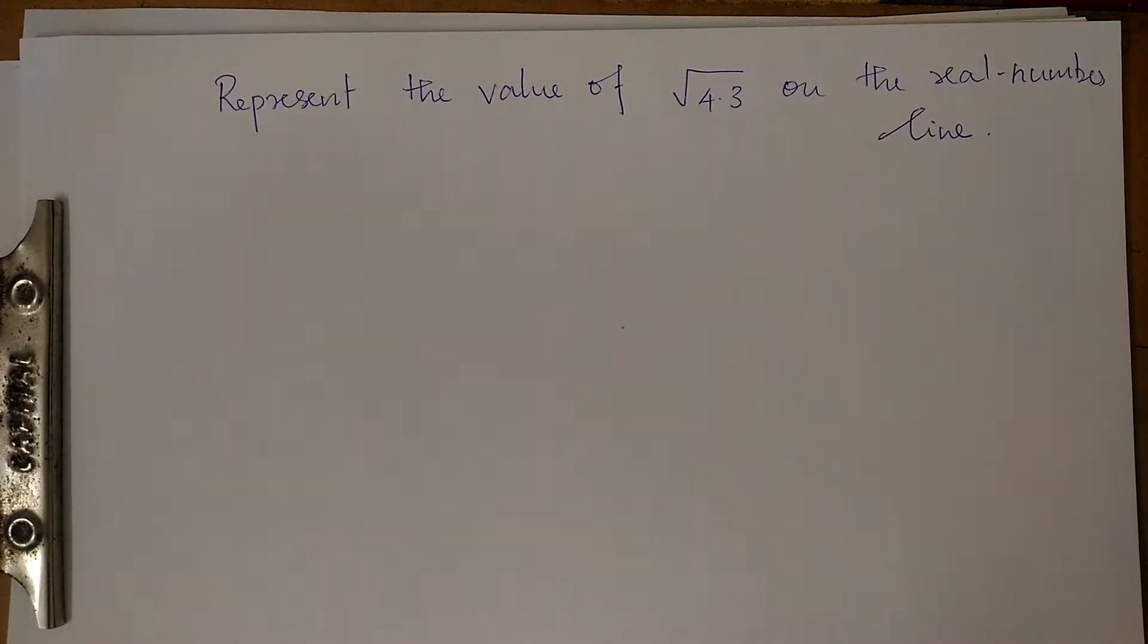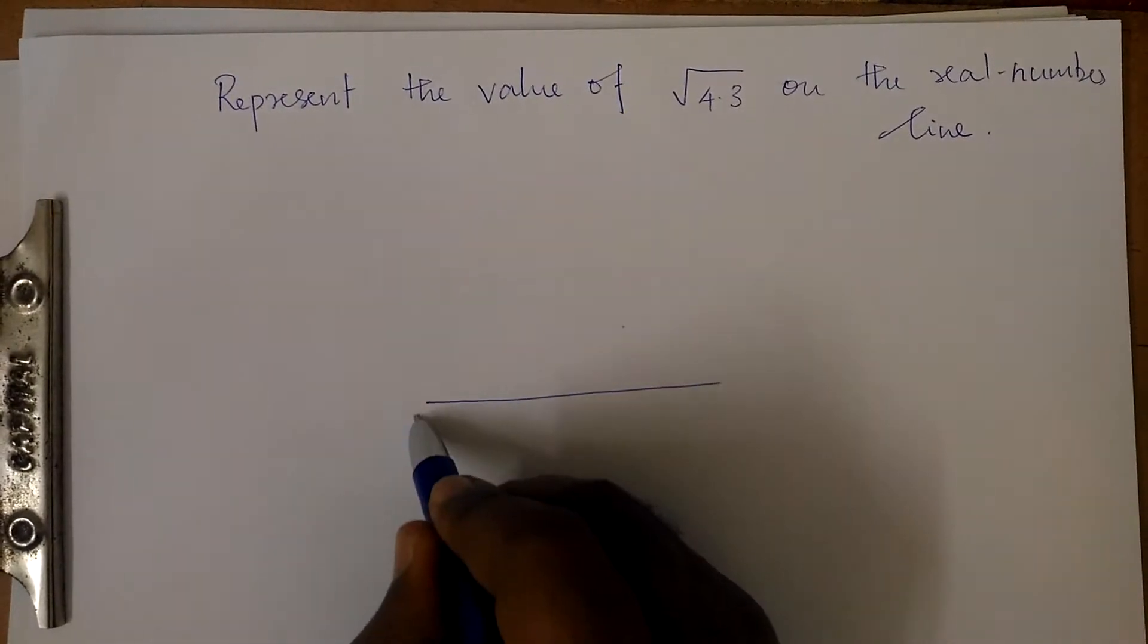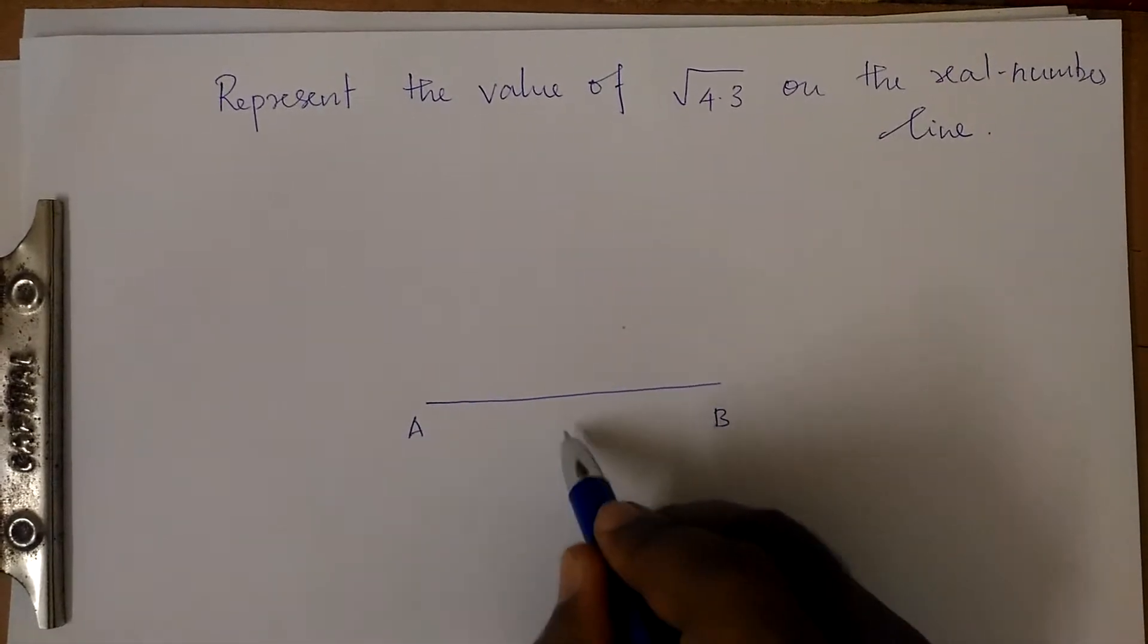Today let's see how to represent the value of √4.3 on the real number line. The first step is to draw line AB of 4.3 centimeters.